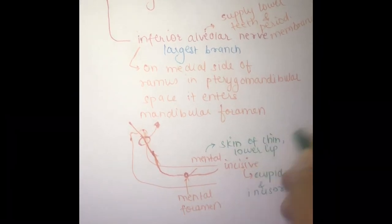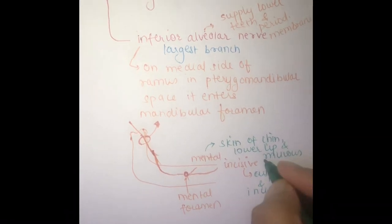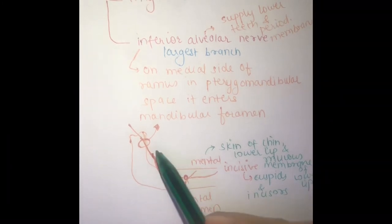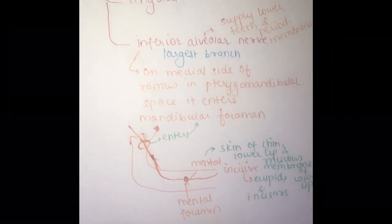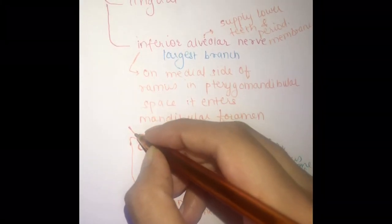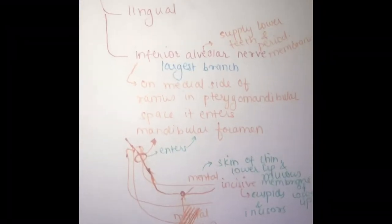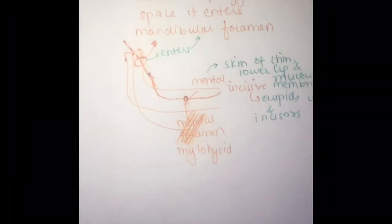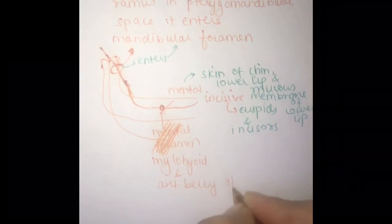The mental nerve supplies the skin of the chin and the skin and mucous membrane of the lower lip — numbness of the lower lip is the subjective sign when giving an INA nerve block. Before entering the mandibular foramen, the inferior alveolar nerve gives off the mylohyoid branch, which supplies the mylohyoid muscle and the anterior belly of digastric. Then it enters the mandibular foramen.